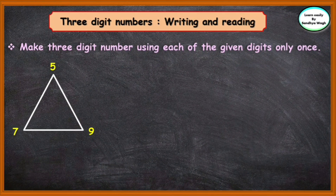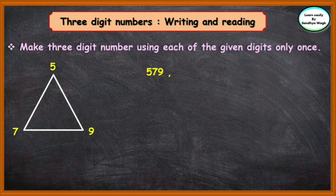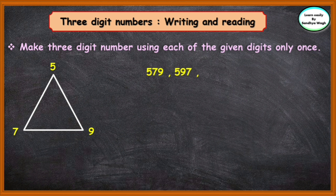Let us take the next example. Here we have 5, 7, and 9. Let us write 5 in hundreds place. The number will be 5, 7, and 9 — that is 579. Now, let us interchange the tens place and the ones place. The number will be 5, 9, 7 — that is 597.